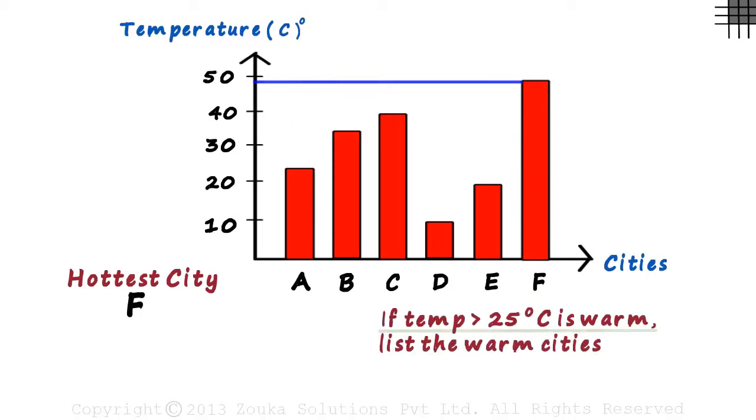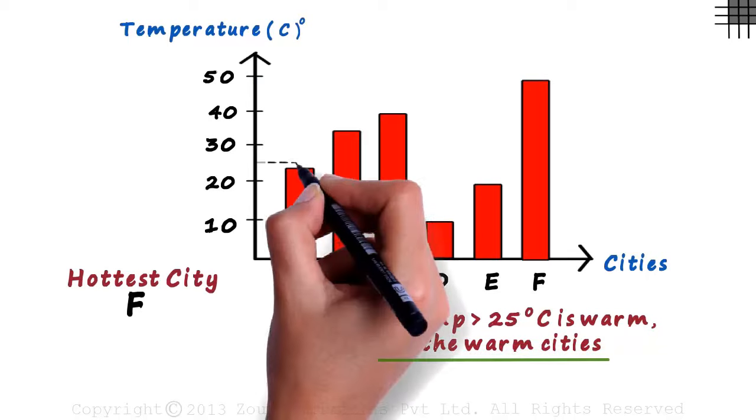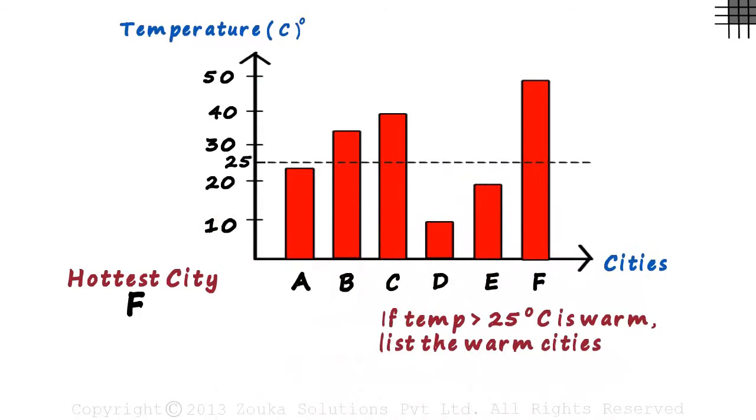Next one. If temperature greater than 25 degrees Celsius is warm, list the warm cities. This is the 25 degrees Celsius line. All cities having their average temperature above this line will be included in the list. So the warm cities are B, C, and F.